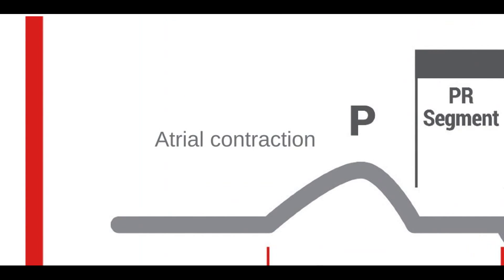When blood enters the atria of the heart, an electrical impulse is sent out from the SA node and conducts through the atria, resulting in atrial contraction. This registers as the P wave on an ECG strip.